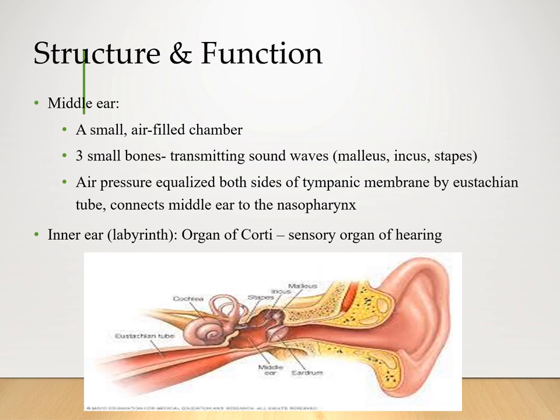In the middle ear, we have the three small bones that transmit the sound waves: the malleus, incus, and stapes — that's the hammer and the other ossicles that process against the tympanic membrane. The inner ear is the labyrinth, or the organ of corti, and this is the sensory organ of hearing. That's where everything sensory happens in that inner ear.